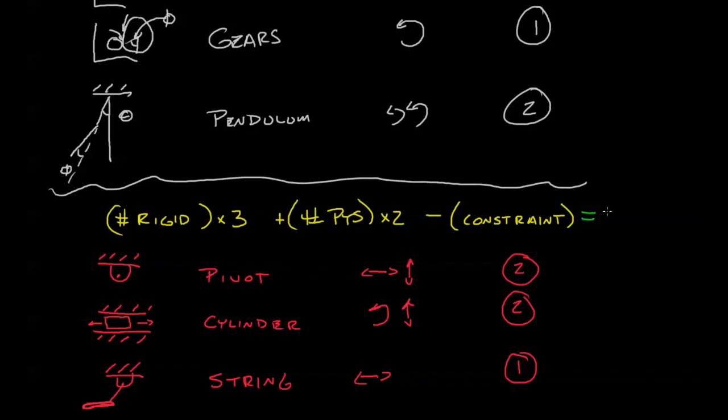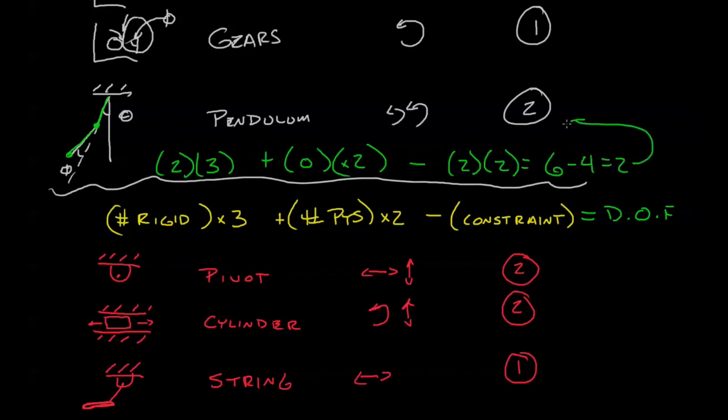Let's remember that this equation equals the degrees of freedom. So let's look at the pendulum. We can look at the first string ball as one body because we care about its rotation, and the second string ball is the second body. So the number of rigid bodies is two. We multiply that by three. There's no particles here, so that's a zero times two. And take a look at the constraints. We have two pivots. Each one of those pivots knocks off two degrees of freedom, so it's two times two. That's six minus four or two. Perfect.